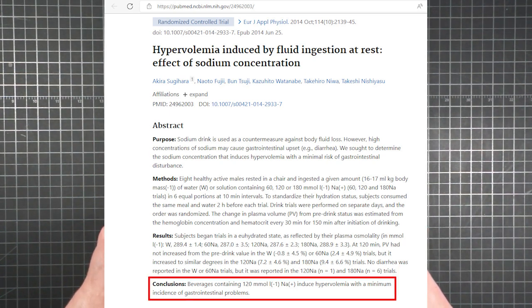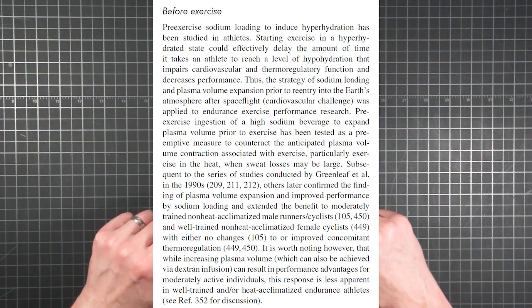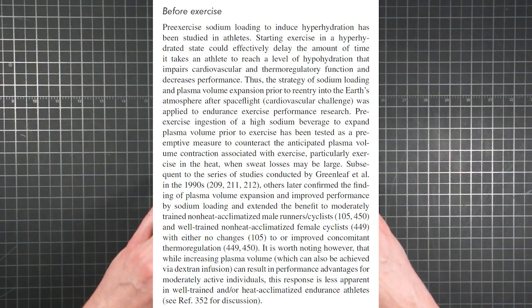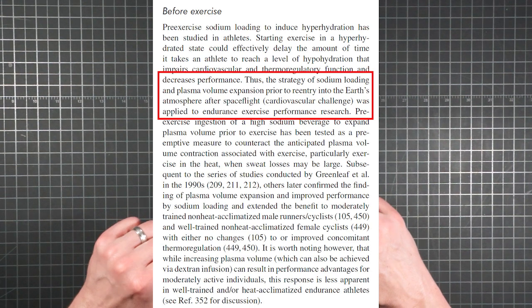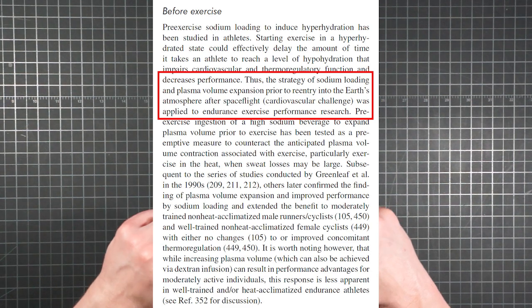So their conclusion, beverages containing 120 millimoles per liter of sodium induce hypervolemia with a minimum incidence of gastrointestinal problems. OptiComp also corroborates the concept of pre-exercise sodium loading to induce hyperhydration for benefit. NASA studied the issue because astronauts were dehydrating in space and passing out on reentry. The technique has since been applied successfully with athletes.